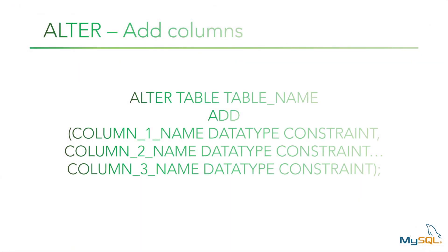The alter command is used to change the structure of a database object such as a table. To add a column to a table, you type alter table followed by the table name. You then specify the add keyword and open parenthesis, then type in the column name followed by the data type and any constraints you would like to add. Do this for all columns you'd like to add, then close parenthesis and terminate with a semicolon. Note that you only need the parenthesis if you are adding more than one column.